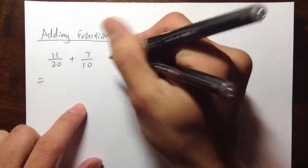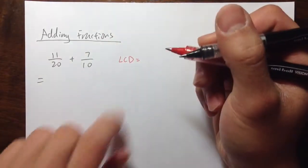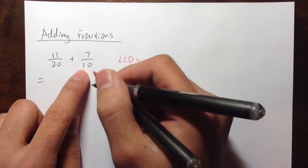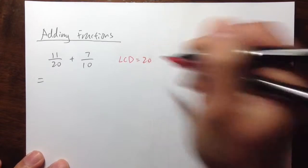So we have to first look for the lowest common denominator, the lowest common multiple of 20 and 10. And if you think about it, 10 times 2 will produce 20, so in this case, the LCD is equal to 20.